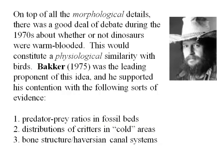On top of the morphological details, there was significant debate in the 70s about whether dinosaurs were warm-blooded. A graduate student named Bacher pointed out not only striking similarities between Archaeopteryx and small carnivores found in Bridger, Montana, but supported the idea that these were probably warm-blooded critters. He looked at predator-prey ratios in fossil beds — warm-blooded animals need more prey due to higher energy requirements — and found those ratios are similar to warm-blooded critters. Also, many dinosaurs are distributed in cold areas like Montana, and bone structure, including the Haversian canal system in long bones, is much more like warm-blooded than cold-blooded animals.